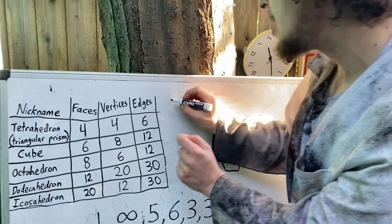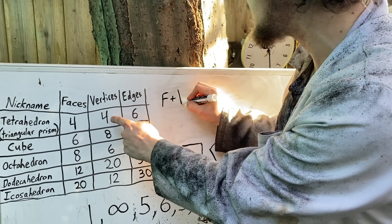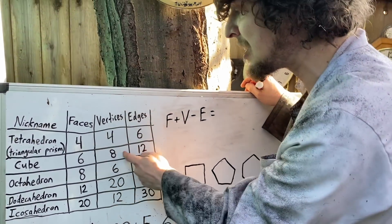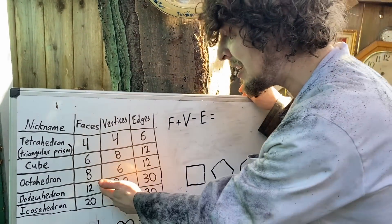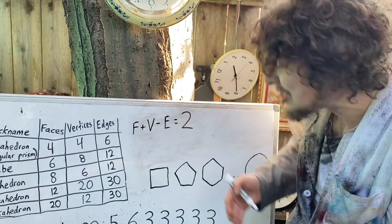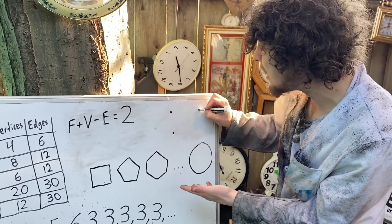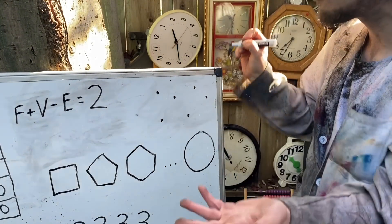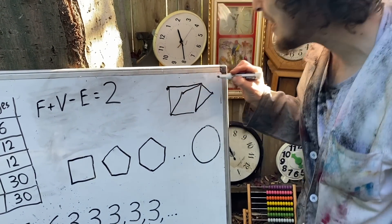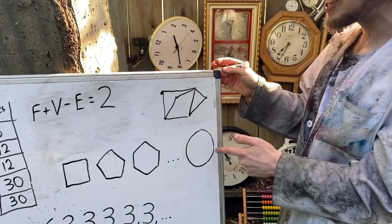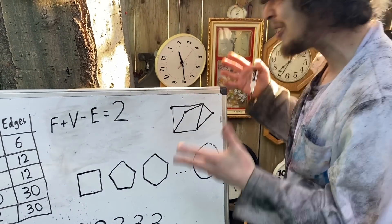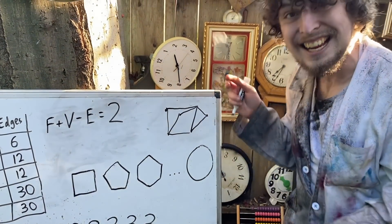For any of these shapes, if we add up the number of faces and number of vertices and subtract the number of edges, we get something interesting: four plus four minus six is two; six plus eight minus twelve is two; eight plus six minus twelve is two; twelve plus twenty minus thirty is two. It will always be two for any 3D polyhedra shape of that sort. Even if you draw a planar graph — random dots connected with line segments — and add up the vertices, the faces including the outside region as one face, and subtract the number of edges, you again get two.